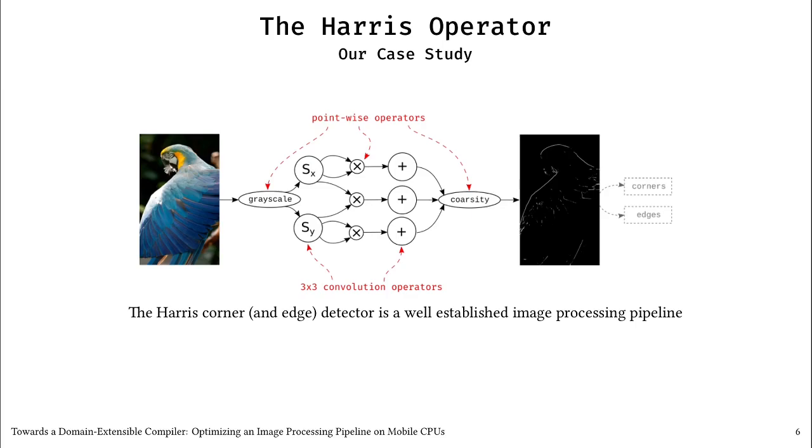Let's move on to our actual case study, which is the Harris Corner and Edge Detector, a well-established image processing pipeline. On the left, you can see an example input image. In the middle, the computational flow of the operator, and on the right, the output of the operator. In this output, corners and edges are visible and can be used for further processing.